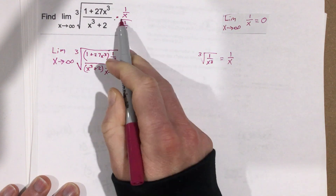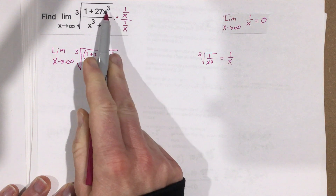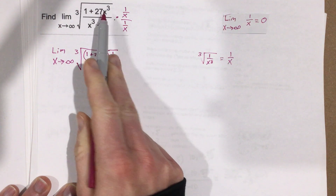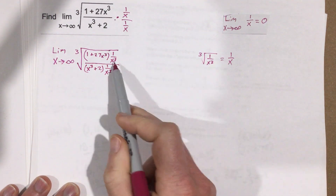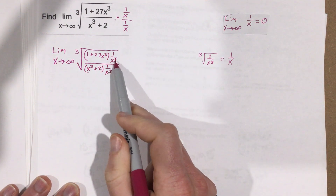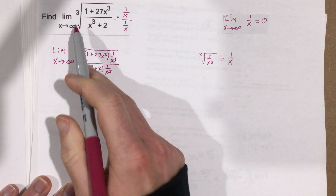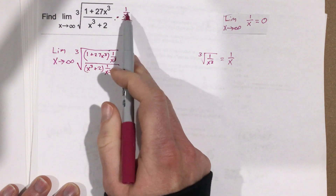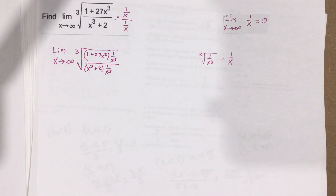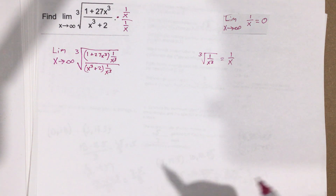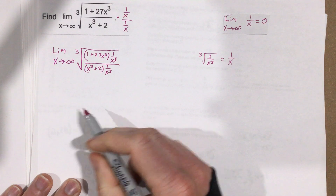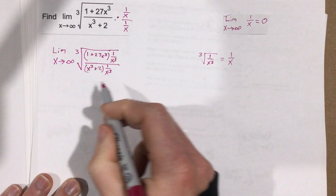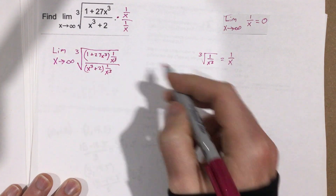Keep in mind we multiplied by 1 over x, so when we bring that inside the cube root, we bring it in as 1 over x cubed — because if we cube-rooted that, it would go right back to being 1 over x. That's the weird algebra move you can do here, but it should make perfect sense. It's just not common that we've done that before.